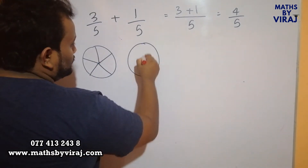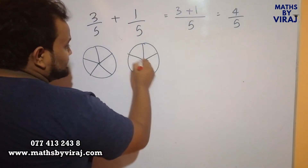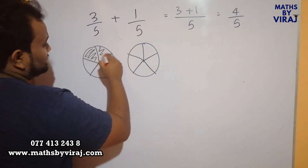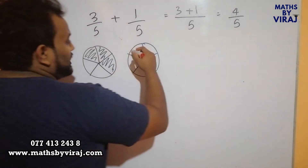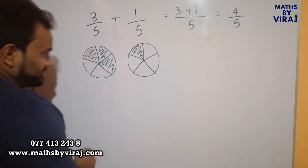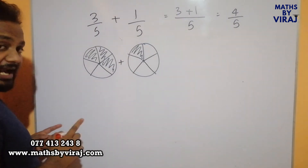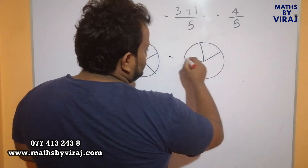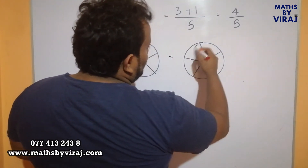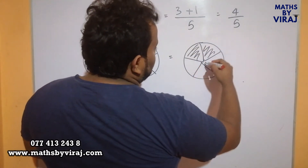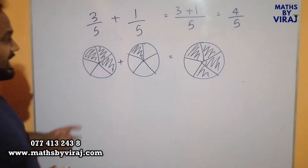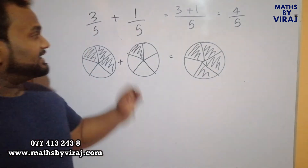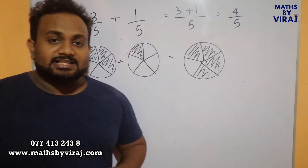If I draw something like a pie chart, you have 3 parts that are coloured and here you have 1 part that is coloured. If they were to be added, the final answer would look like 4 parts that are in colour. Therefore, you can see that when the denominators are the same, we can easily add the numerators and get the answer.